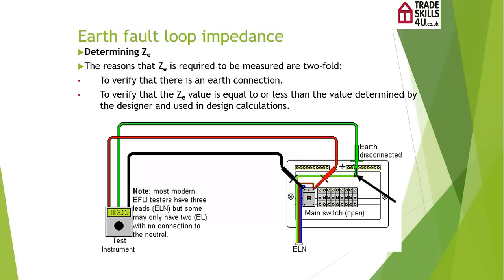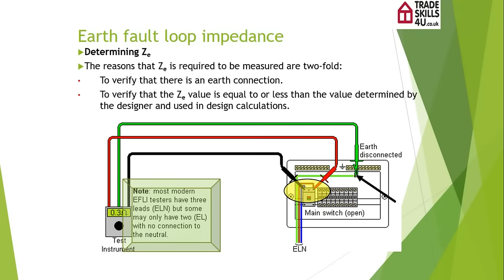Once we've isolated, we can disconnect the conductor, clamp onto it, and then our other two leads on our meter go around the incoming line and the neutral tails, which obviously will still be alive. Most modern earth fault loop impedance testers have got three leads, so they need the neutral in order to conduct the test. However, some newer meters have only got two leads, so it will be a question of reading your manufacturer's instructions as to whether you need two leads or three.